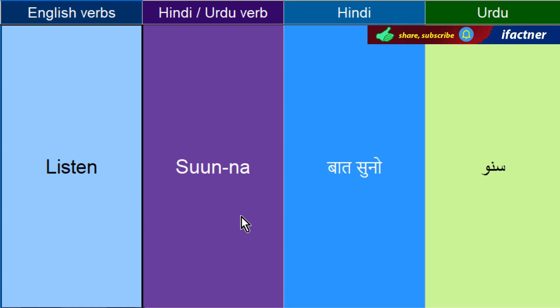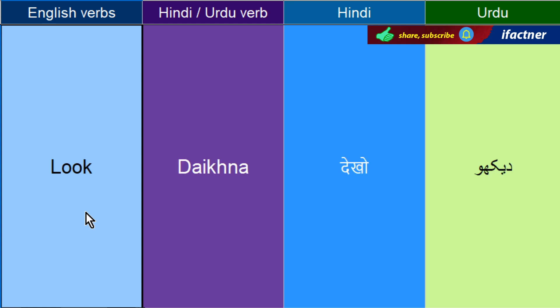Sunne ko kaha jata hai — Listen. Jeena, ya kahein peh rehne ko bhi Live kaha jata hai. Jis saan: I live in this apartment — mein is flat mein rahta hoon. Deekhne ko kehtay hai — Look. Khowna — Lose. Pyaar kerna — Love. He loves you — woh aap se piaar kerta hai.